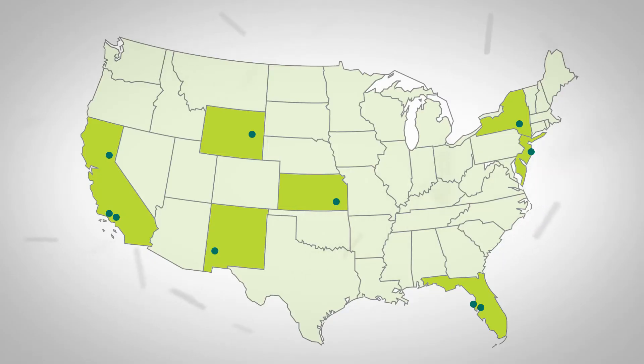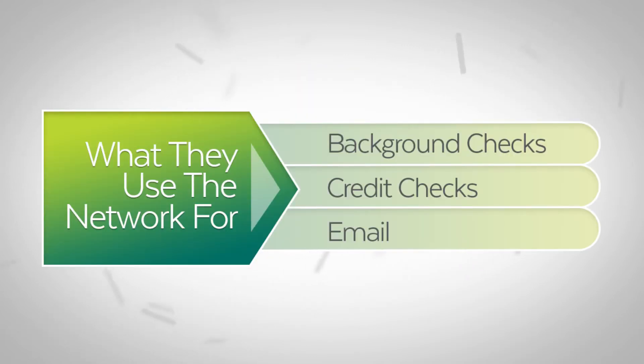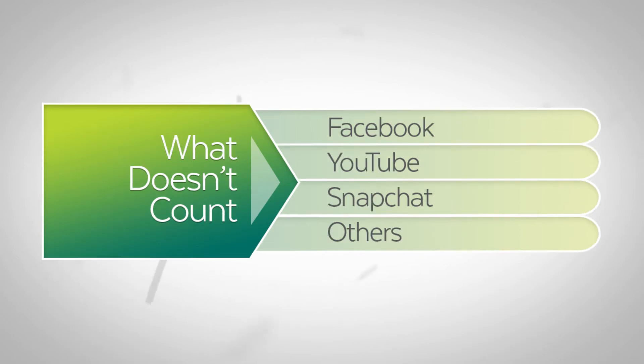Before we get started into planning high availability, we need to ensure that there's an actual business problem to solve. The first step in developing a strategy for high availability is to understand what impact an outage of various systems would have on our ability to do business. Consider a small real estate company with lots of remote offices around the country supporting mostly virtual workers and providing meeting space. The only thing they really use the network for is background checks, credit checks, and email. Facebook, YouTube, Snapchat, and the others — they don't count.